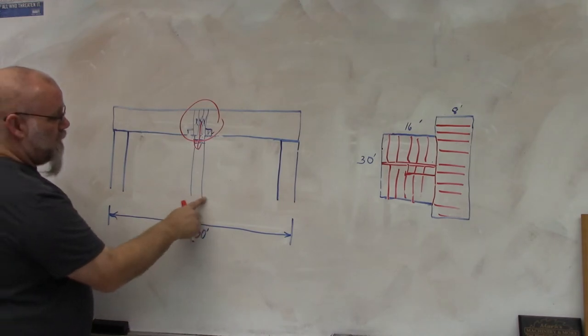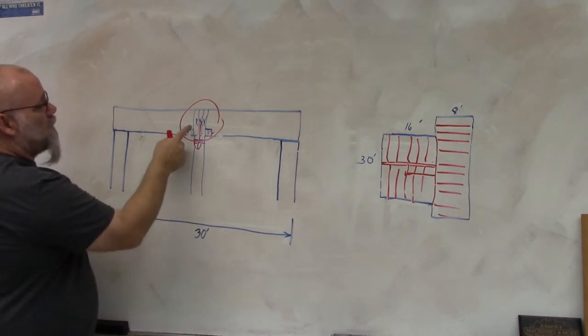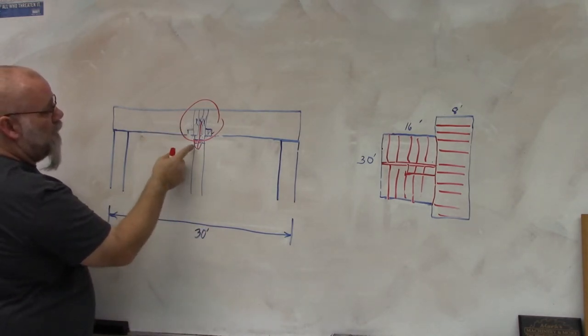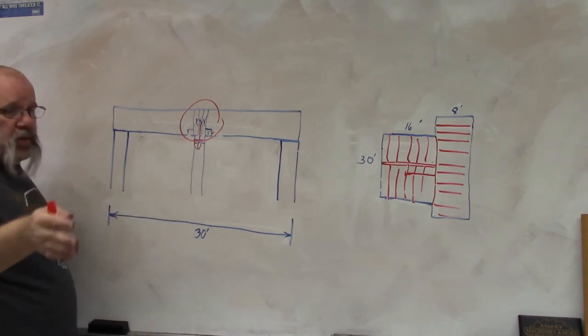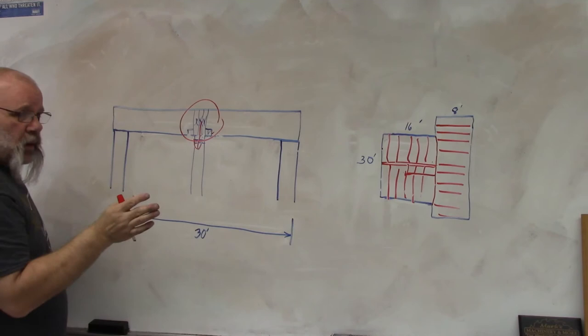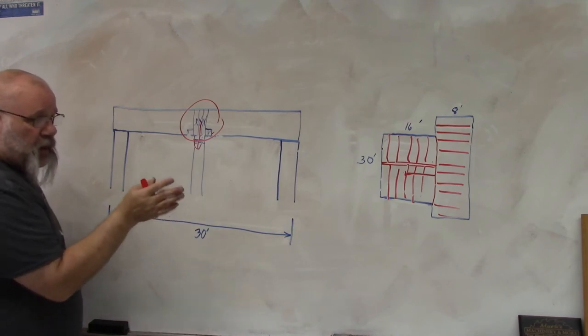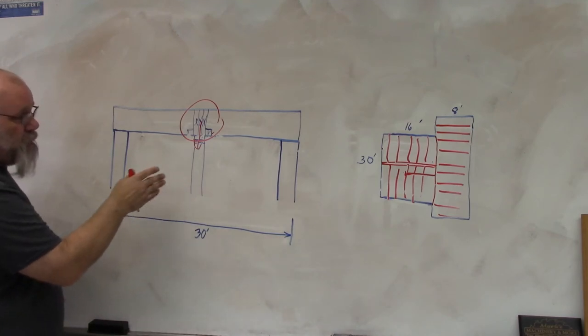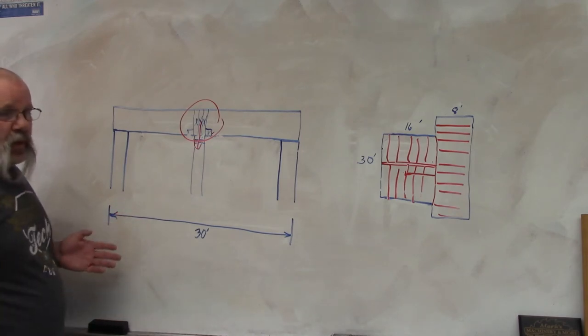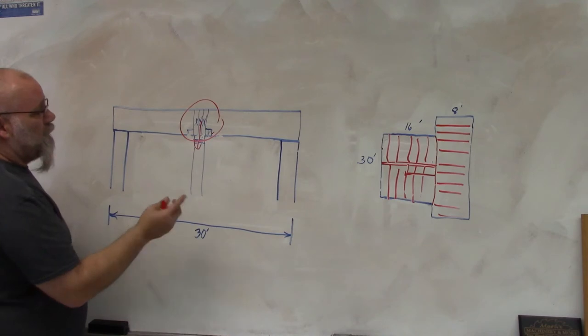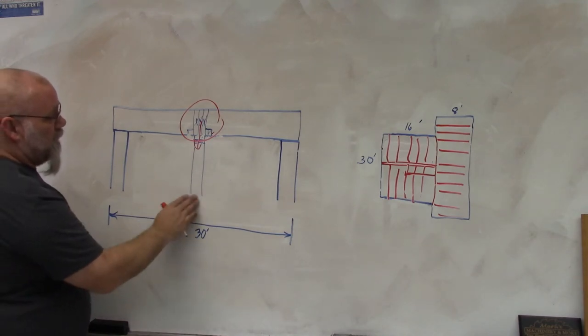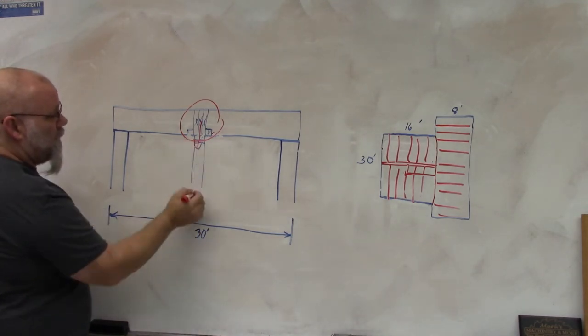If you wanted to take this wall out, since the beam is already up here, all you would have to do is put posts. You'd have to figure out how far apart the posts would need to go, but you could just put posts in there and then you could maybe open up a lot of it, maybe not all of it, but you could open up a good chunk of it if you took this wall out and just added posts instead of the wall.